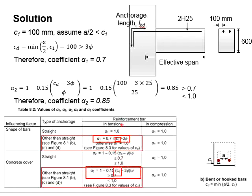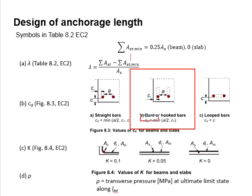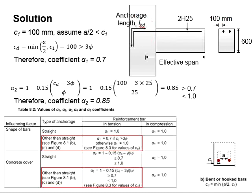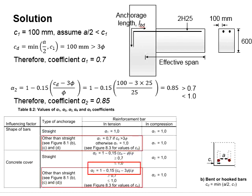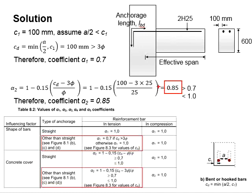In the equations for α1 and α2, we need to determine CD. For the bent bar, CD is determined as the minimum of a/2 and C1. C1 is found to be 100 mm; however, a/2 is not given, so we assume a/2 will not be greater than C1. Therefore CD equals 100 mm. This is found to be greater than 3 times the bar diameter, so α1 equals 0.7. To determine α2, substituting the relevant values into the equation gives α2 equal to 0.85, which is between 0.7 and 1.0; therefore α2 is used as 0.85.